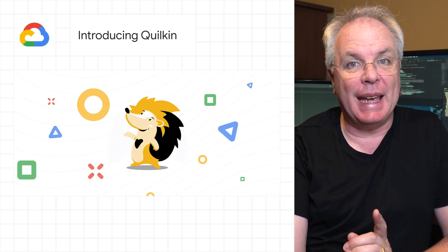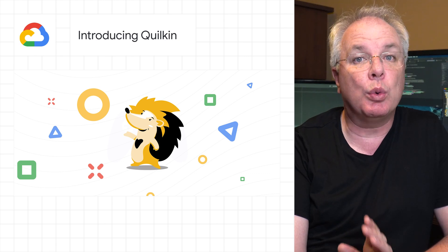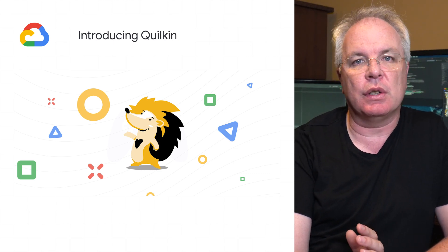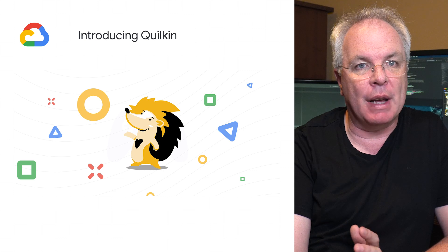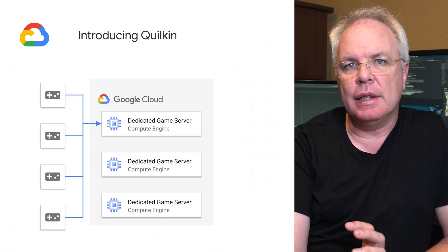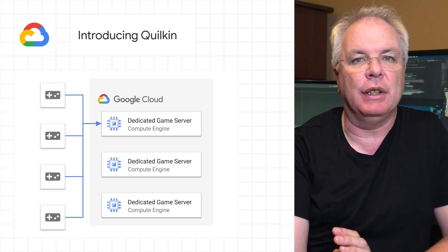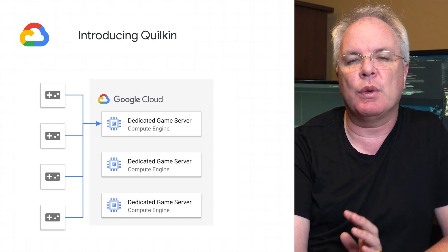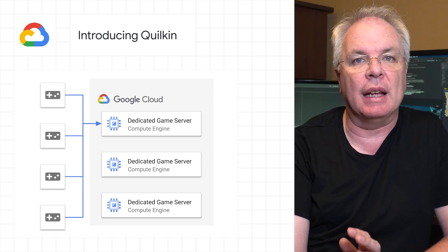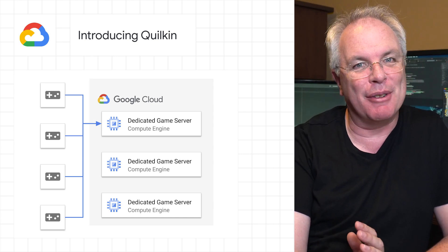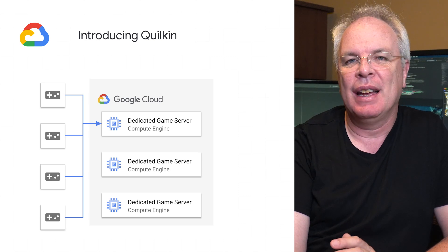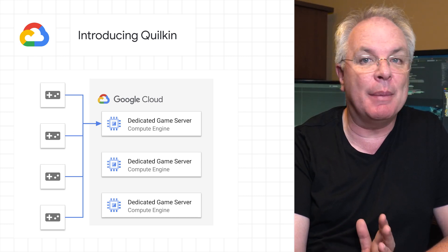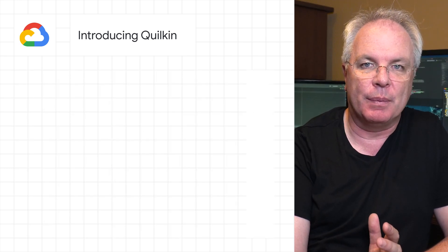Still on gaming, Google Cloud is announcing Quilkin as the latest entry of open source solutions for game developers. Quilkin is an open source, non-transparent UDP proxy specifically designed for use with large-scale, multiplayer-dedicated game server deployments. It's designed to ensure security, access control, telemetry data, metrics, and a whole lot more.